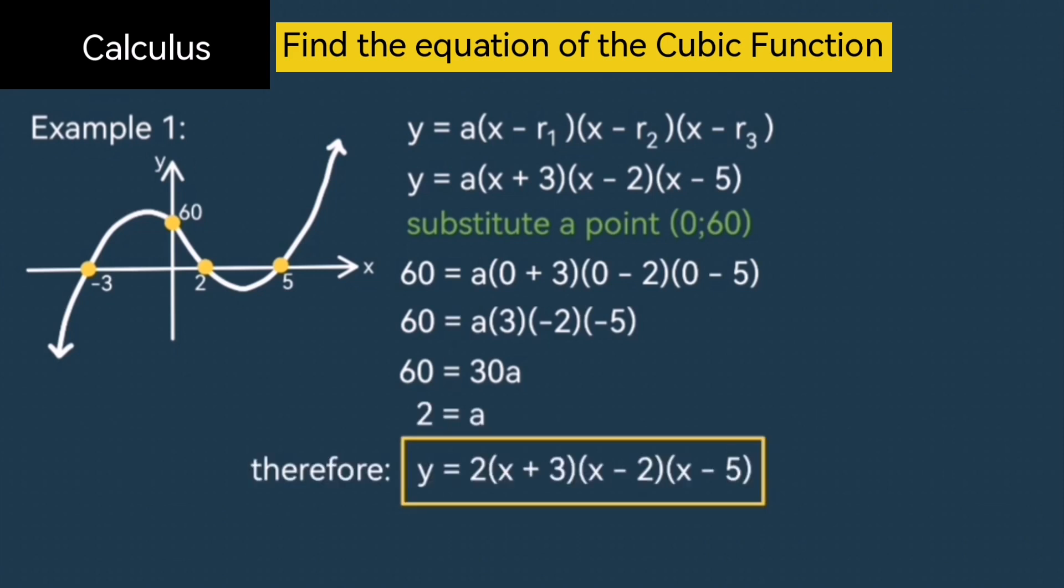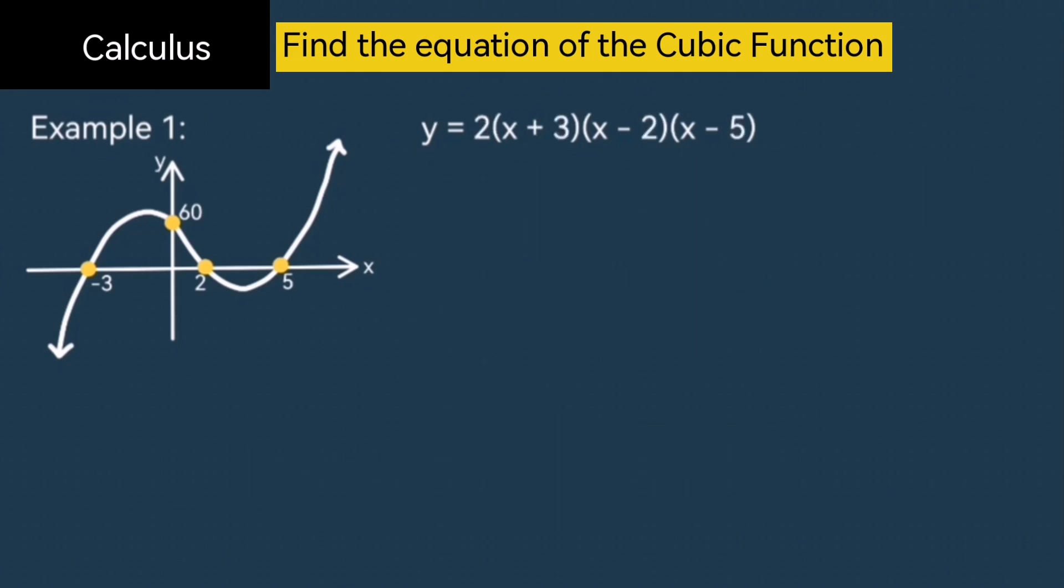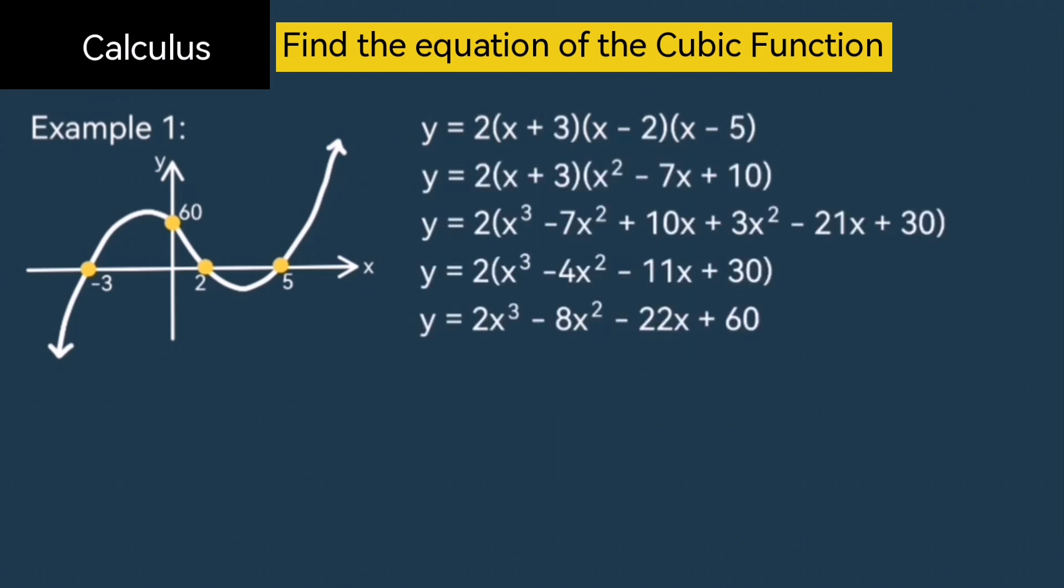You now have the equation of the cubic function. Except this is not in the standard form. This is in the factorized form. Now, you'd have to multiply everything out. This is quite a lot of algebra, but you end up with 2x cubed minus 8x squared minus 22x plus 60. And that's the equation of the cubic function.